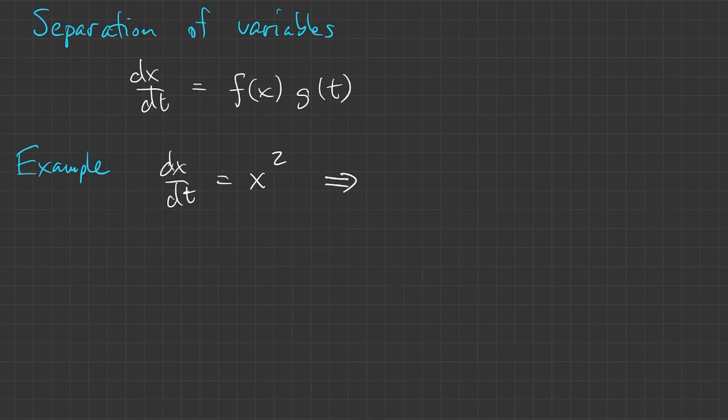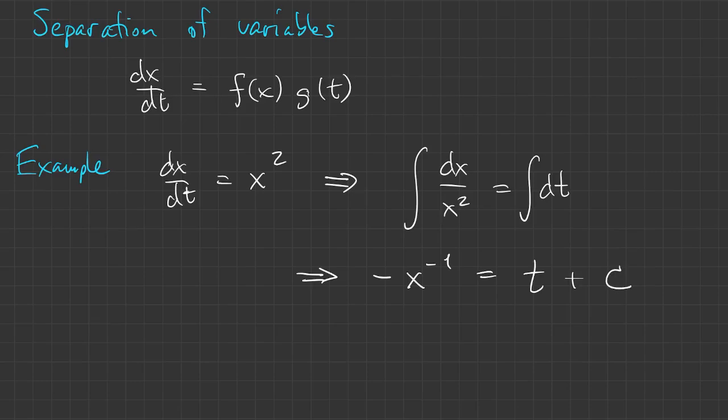We just rewrite it with all the x's on the left and all the t's on the right, and now both sides are in a form that we can integrate. When I do the integrals, I'll get an arbitrary constant on both sides, but I can add those together and make them a single constant c, and then we can solve for x.